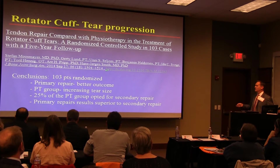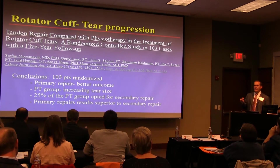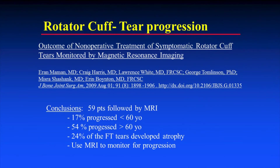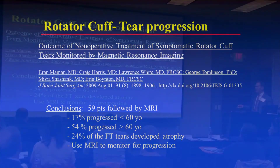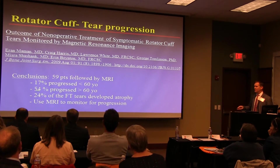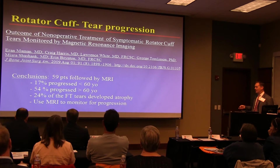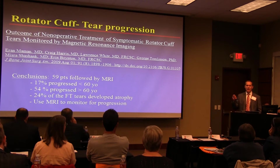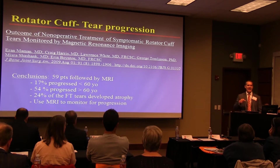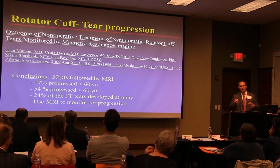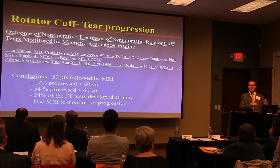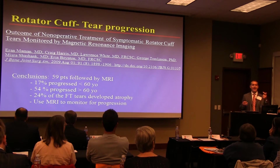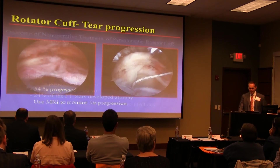A 2009 study of 59 patients followed by MRI examined tear progression in symptomatic rotator cuff tears treated non-operatively. 17 tears progressed overall; under 60 years of age, 54% progressed; over 60, 24% progressed. 24% of full-thickness tears developed atrophy — and this is irreversible. If you're watching a rotator cuff tear and it becomes larger, retracted, and atrophic, the patient won't do as well with repair. Get a yearly MRI if following them, and don't just do cortisone injections for years without reassessment.